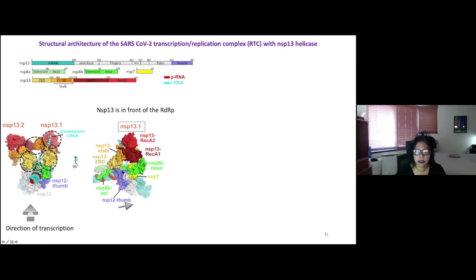The RNA is coming out here. And the helicase is sitting in front of the active site. NSP13-1 is actually interacting with both NSP8 extension, the green, as well as the thumb of the RDRP. So that's one interaction.